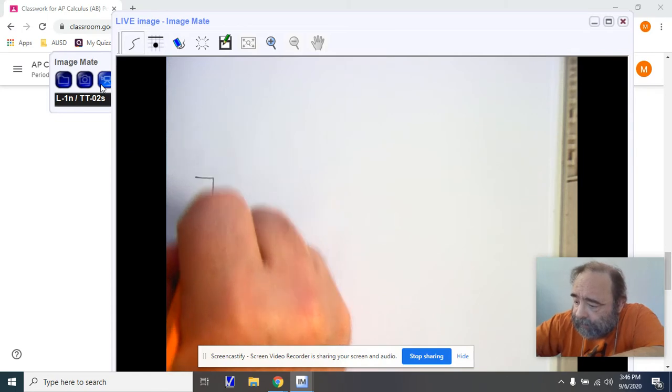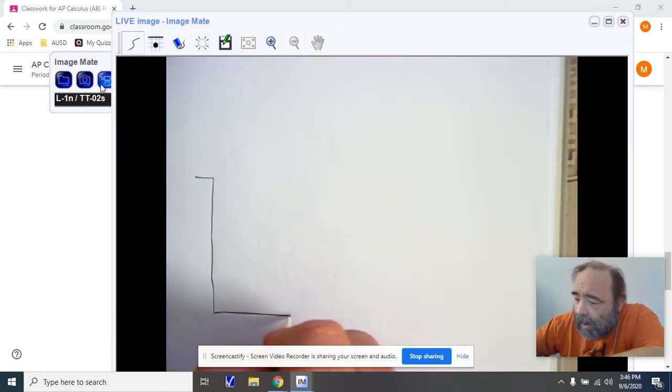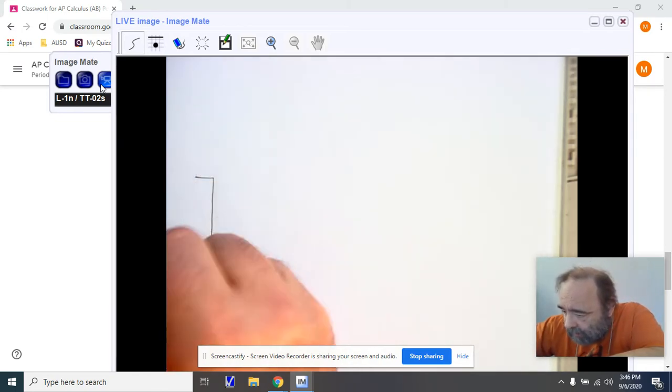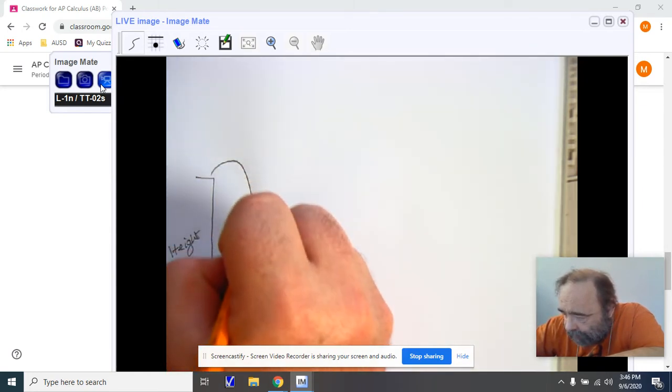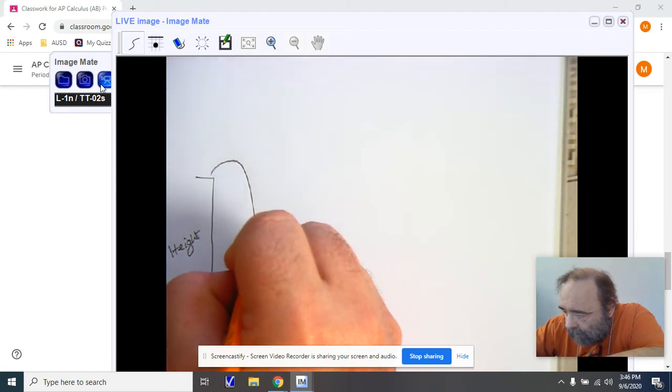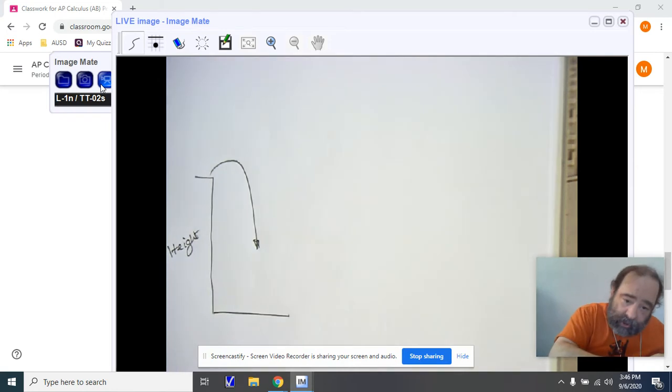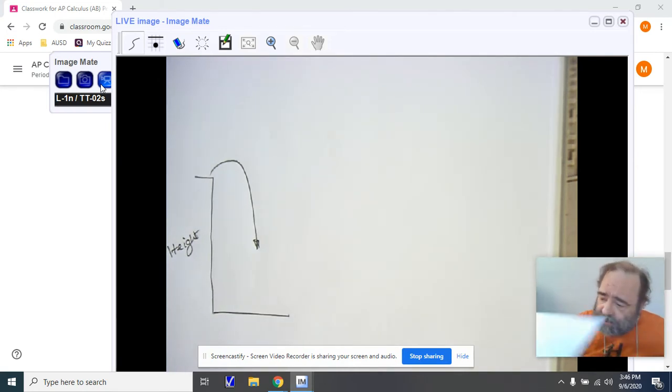So they're giving you a situation where you are at the top of a building of some height. You're going to be dropping that object and it will fall like so. There are two situations that we have to worry about here. Let me just give you the formulas that we're going to work with.